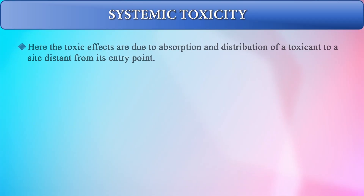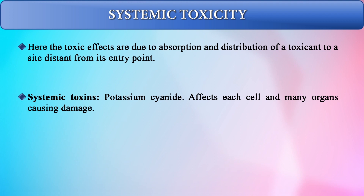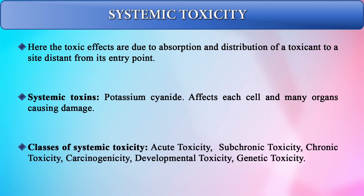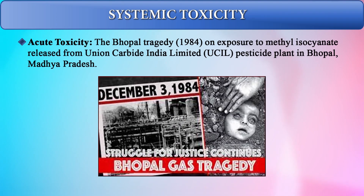Systemic toxicity involves absorption and distribution of a toxicant to a site distant from its entry point. Potassium cyanide is an example, as it can affect each cell and organ, causing damage throughout the body. Classes of systemic toxicity include acute, sub-chronic, chronic, carcinogenicity, developmental toxicity, and genetic toxicity.